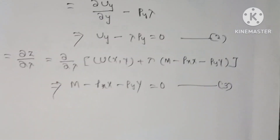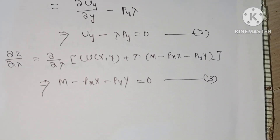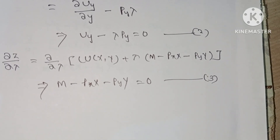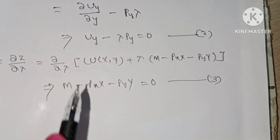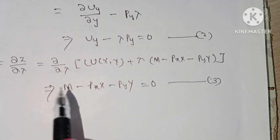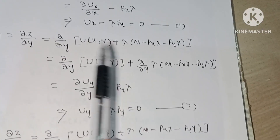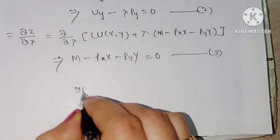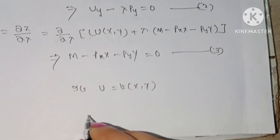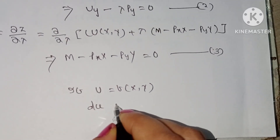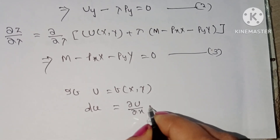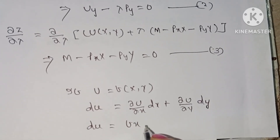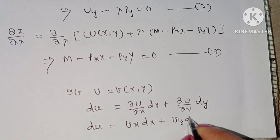Our present objective is to obtain the rate of change in the consumer's purchases with respect to changes in prices. This can be found by taking the total differential with respect to all the variables — x, y, price, and λ — of the three equations. The formula for total differential: if u is a function of x and y, then du equals ∂u/∂x·dx plus ∂u/∂y·dy.